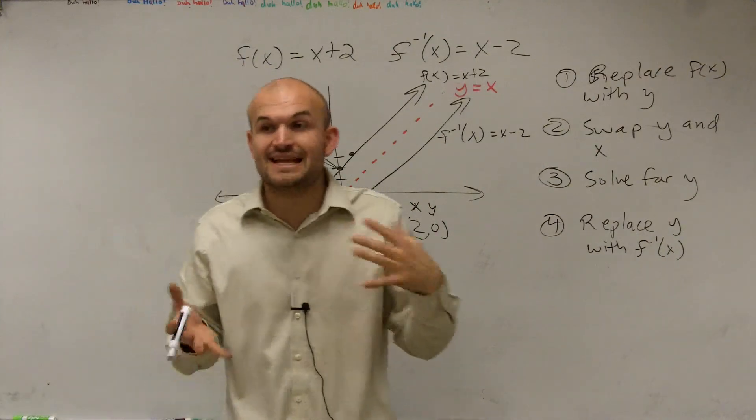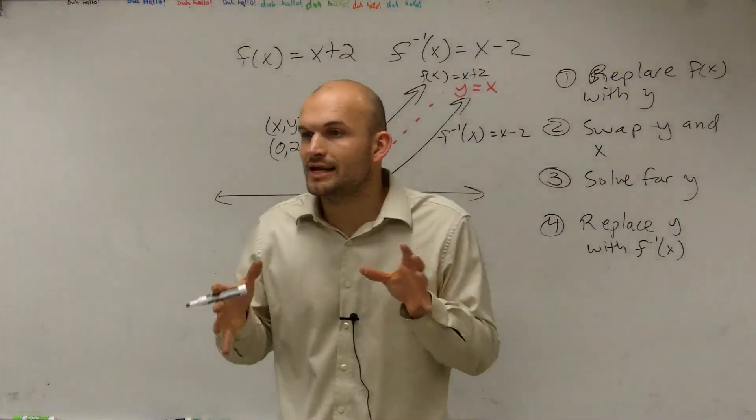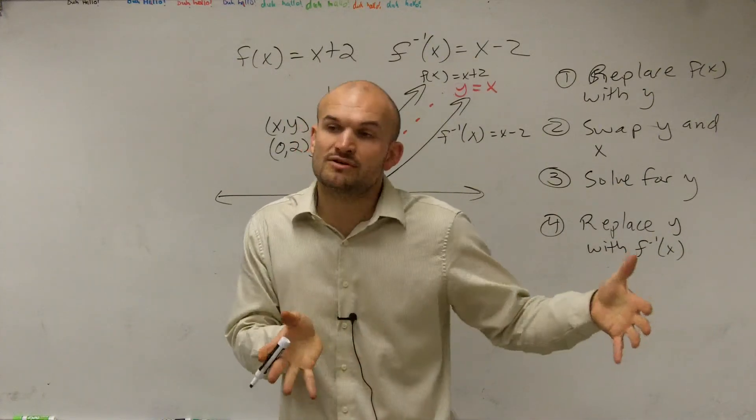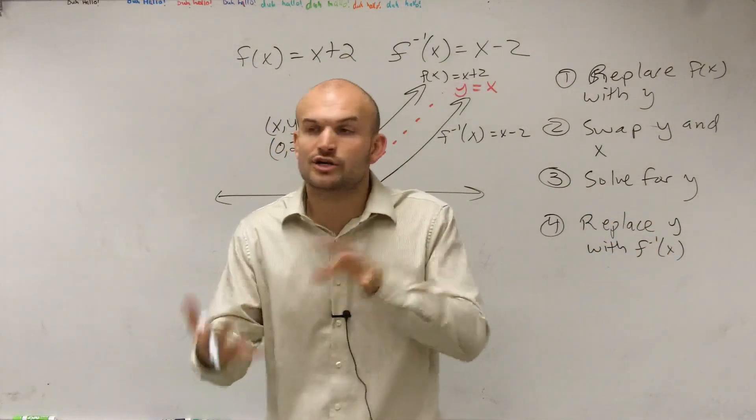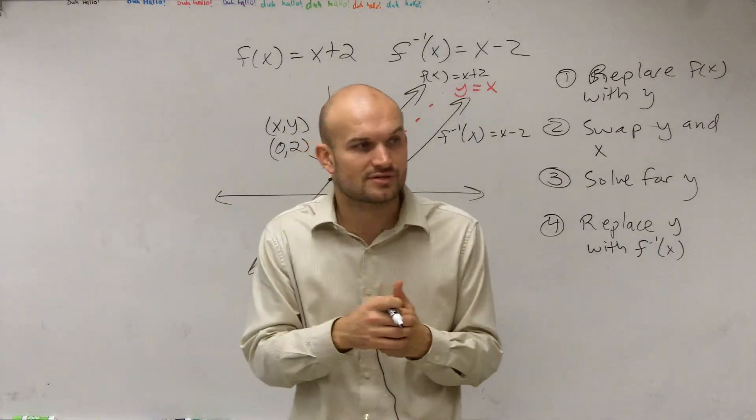So when dealing with f of x and f inverse of x, what you're simply going to do, Noah, is you're going to swap your x and y's. So if I give you a set of coordinate points, and I say find the inverse of those, you're going to swap the x and the y coordinates, and that will give you the points in the f inverse.